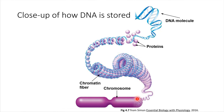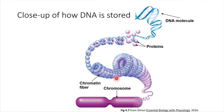This whole thing is called a chromosome — a very organized structure of DNA packaged with protein. That is chromatin: the DNA wrapped around these proteins.